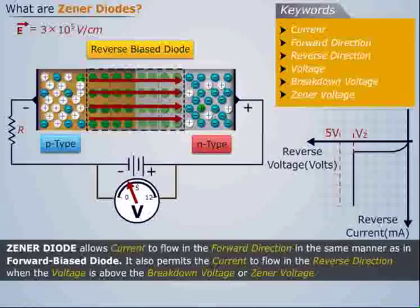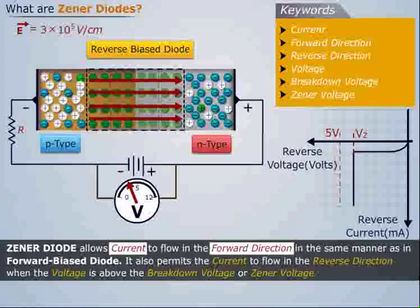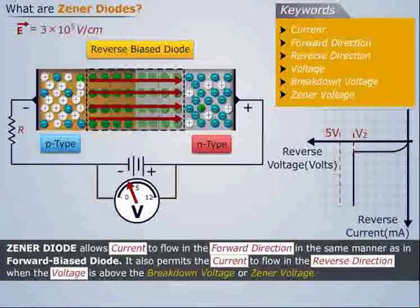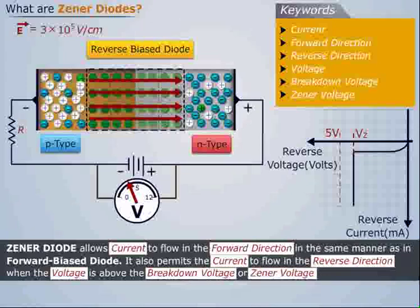Thus, we can say that Zener diode allows current to flow in the forward direction in the same manner as in forward biased diode. It also permits the current to flow in the reverse direction when the voltage is above the breakdown voltage or Zener voltage.